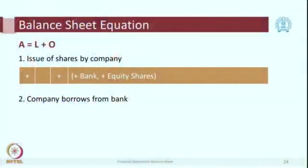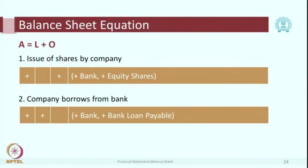Transaction 2: the company borrows from a bank. The bank sanctions a loan and pays the money, so bank balance goes up and a new liability — bank loan payable — is created. A is plus, L is plus, no change in O. If a loan of 10 lakhs is received, loan payable increases by 10 lakhs and bank balance increases by the same amount — that is why the balance sheet always balances.